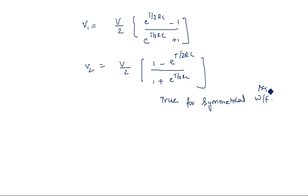These expressions are valid for a symmetrical square waveform where the on-period equals the off-period. This is the way to explain the operation of a high-pass RC circuit when a square waveform is applied. In the next video, I will explain how to calculate the percentage tilt. In the low-pass RC circuit we calculated rise time, but in the high-pass RC circuit we should calculate percentage tilt.